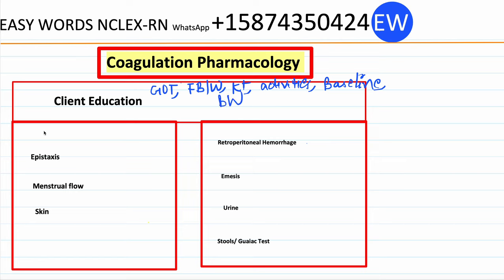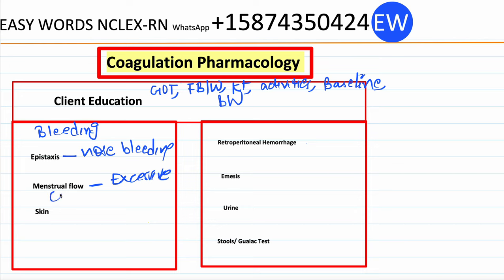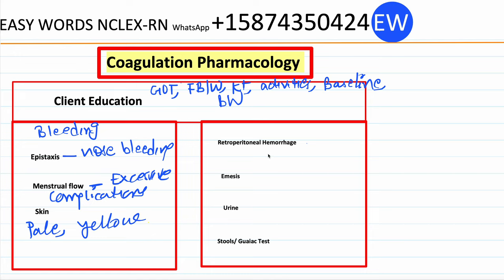Also instruct the client to monitor closely for any signs of bleeding. Epistaxis — watch for nosebleeds. Menstrual flow — excessive menstrual flow can be a complication of blood thinners. Skin color — if the skin looks pale or yellow, it may be an indication of bleeding.